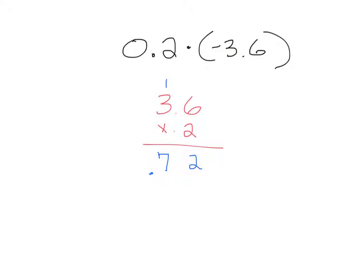Now since our signs were different, our answer will be negative. So negative 0.72 is the answer. Or you could also put your answer in as negative 0.72. Either one of those answers is going to be correct. It does not matter. It's the same thing.